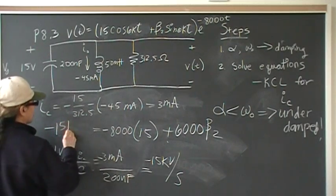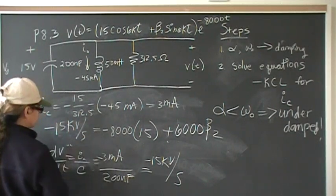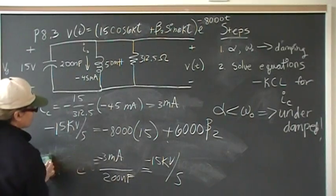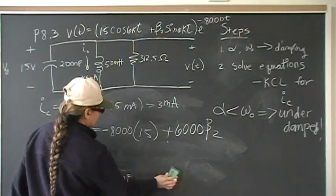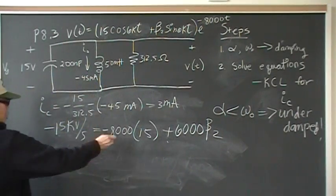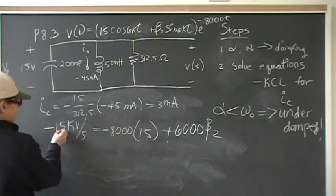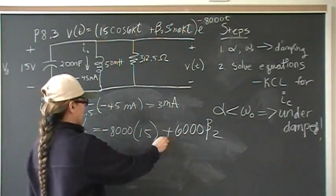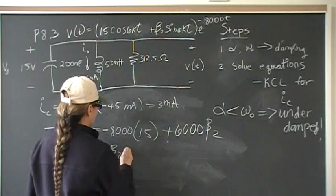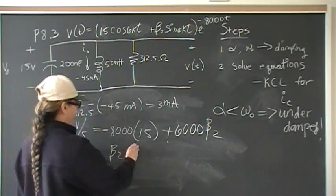Okay, so now that we have that critical piece of information, we can plug it back into here. Make it negative 15 kV per second. Once you do that, this is just an algebraic manipulation. Bring this over here, divide by 6,000. So, you should have come up with beta 2 is 17.5.